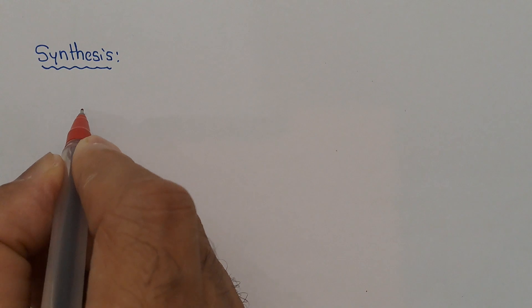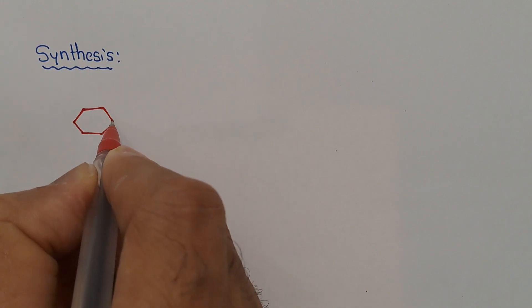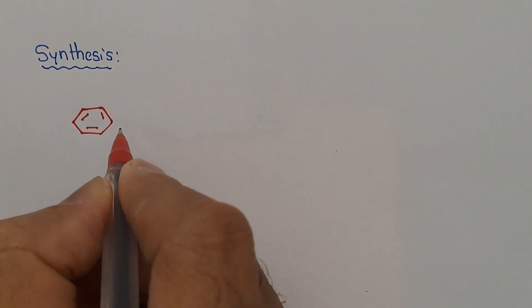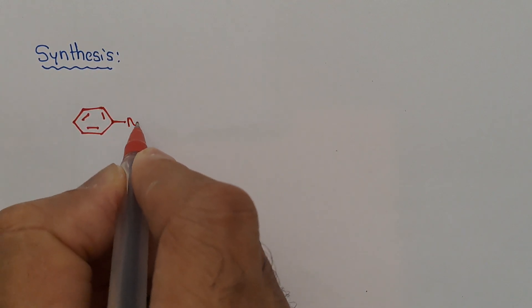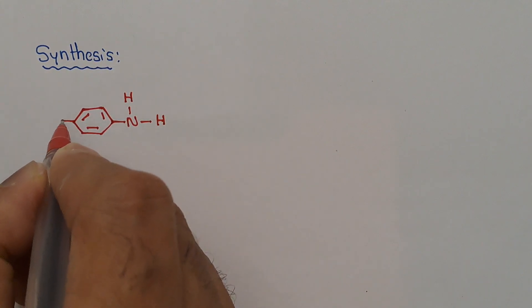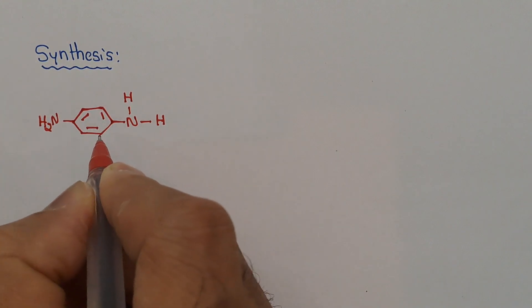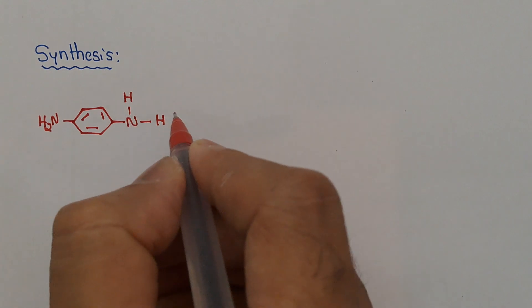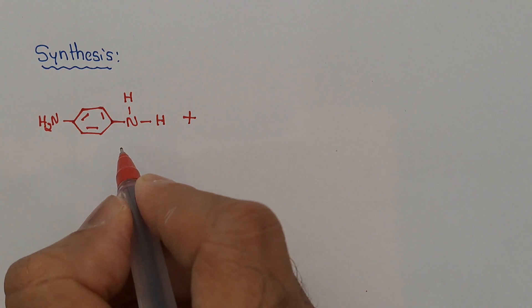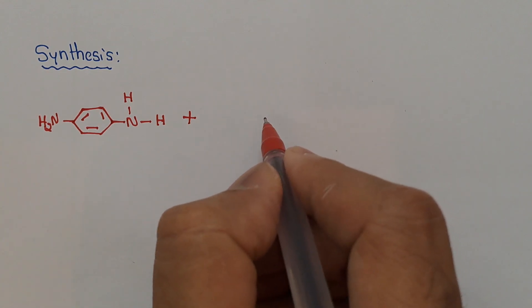Both monomers contain a benzene ring. Now I am writing the structure of paraphenylenediamine. It contains NH2 groups at positions 1 and 4. NH2C6H5NH2. This is paraphenylenediamine. Another monomer is terephthalyl chloride.